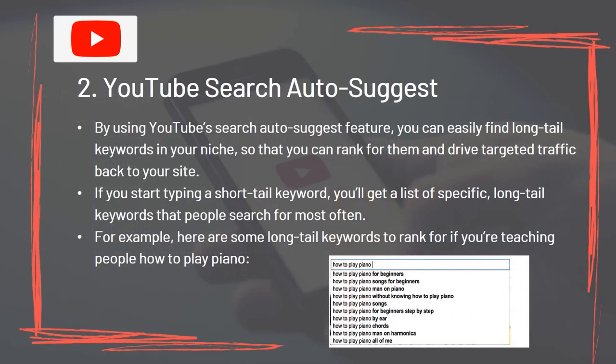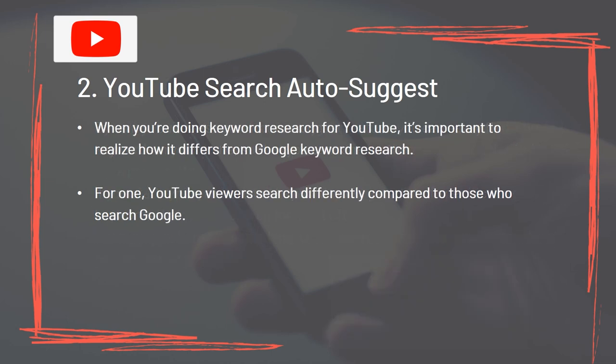Tool 2: YouTube Search Autosuggest. By using YouTube's Search Autosuggest feature, you can easily find long-tail keywords in your niche so that you can rank them and drive targeted traffic back to your site. If you start typing a short-tail keyword, you'll get a list of specific long-tail keywords that people search for most often. When you're doing keyword research for YouTube, it's important to realize how it differs from Google keyword research – YouTube viewers search differently compared to those who search Google.